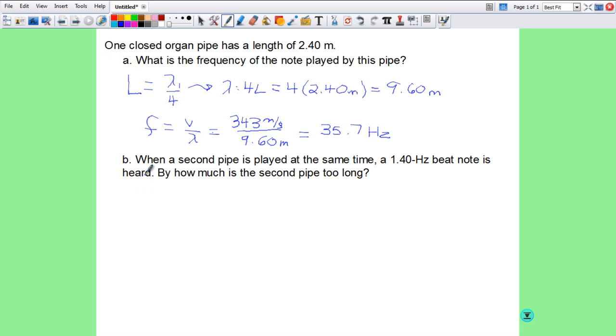Now when we introduce a second pipe playing at the same time, a 1.40 hertz beat note is heard. Now I didn't explain in any powerpoints how to do beats because it's pretty simple and I wanted to save for this problem. So the formula for the beats. So the frequency of the beat equals the absolute value frequency A minus frequency B. So in this case, the beat we're going to hear, frequency, is 35.7 hertz minus this guy, 1.40 hertz. So the beat frequency that we're going to hear is 334.3 hertz.